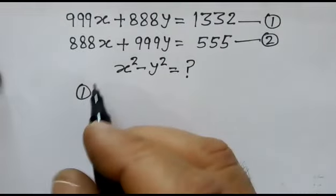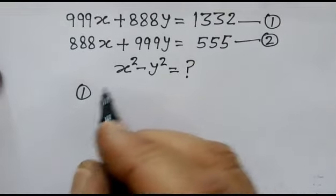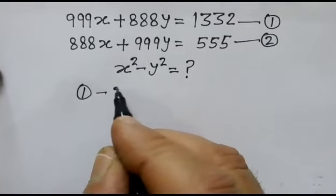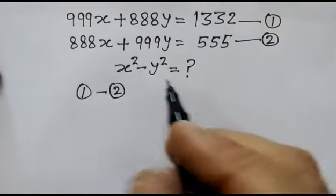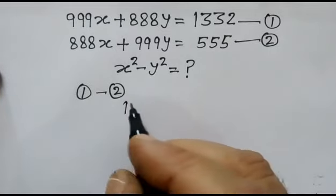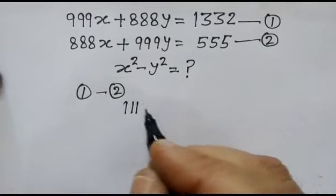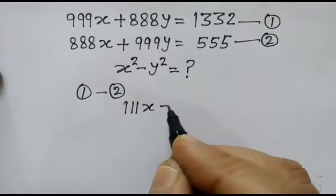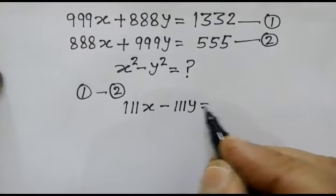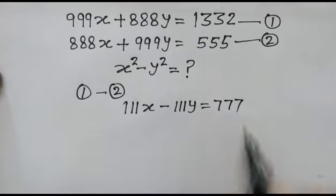So first, we will subtract the equation second from equation first. We get 111x minus 111y equals 777.